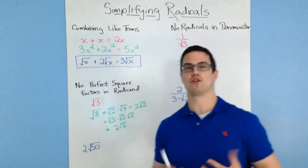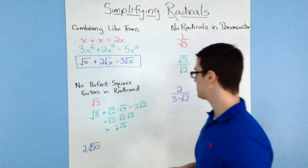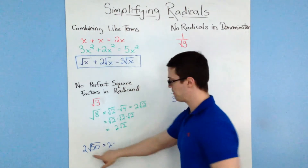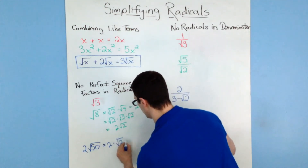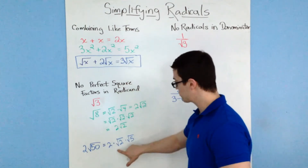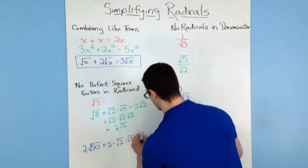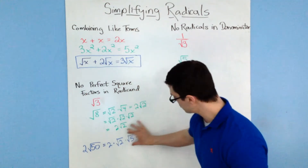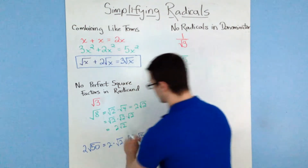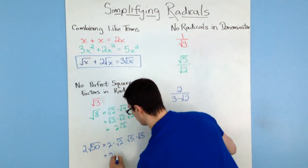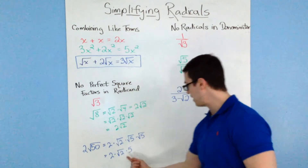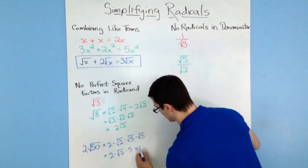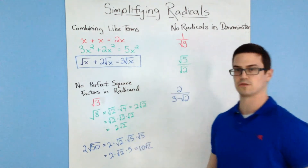This last one, 2 times the square root of 50, is a little more involved. I'm going to factor it out: 2 times the square root of 2 times the square root of 5 times the square root of 5. Because square root of 5 times square root of 5 times square root of 2 is the square root of 50. I notice there are 2 square roots of 5, which combine to form a regular 5. So you have 2 times the square root of 2 times 5, and 5 times 2 is 10, giving 10 times the square root of 2.